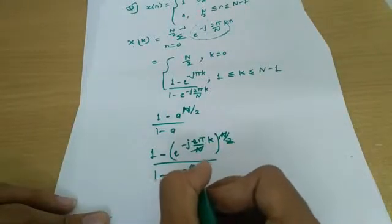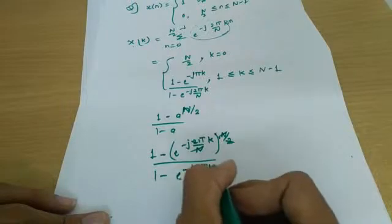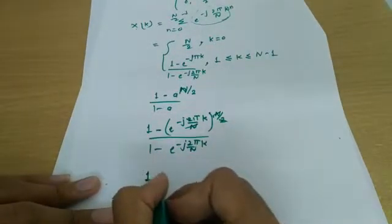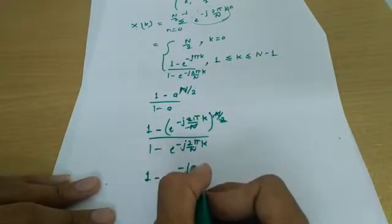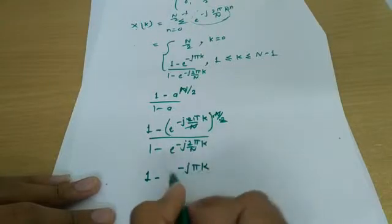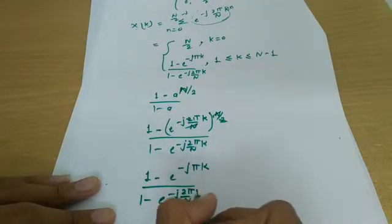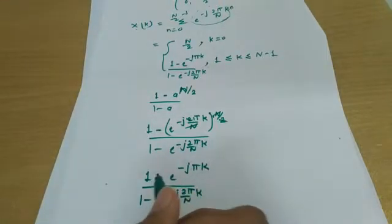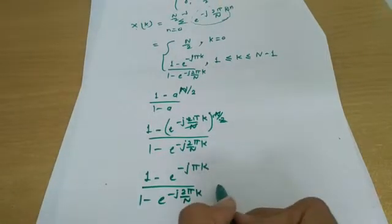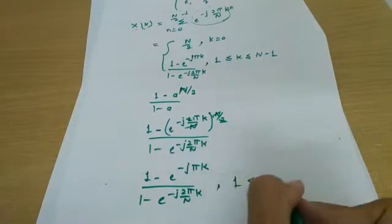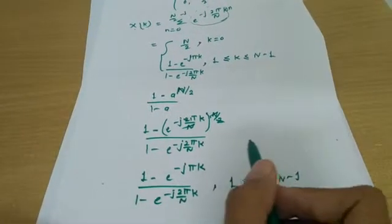After simplification, we are left with (1 - e^(-jπk))/(1 - e^(-j2π/n·k)) for k from 1 to n minus 1. We can further generalize it also.